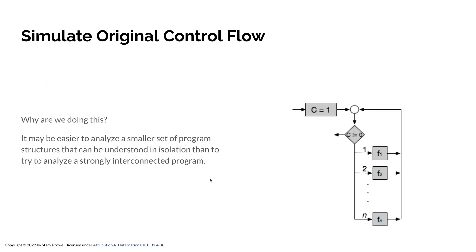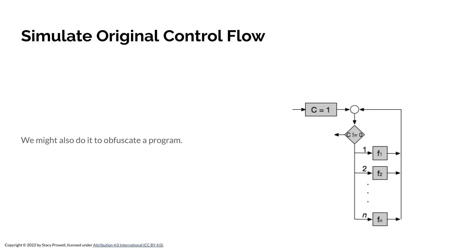We add a superstructure around all of these to simulate the original program structure. We initialize the counter to 1, and then while the counter hasn't reached zero — the exit is labeled 0 — we check if we should do node 1, if so perform F1; if the counter is 2, perform F2; if the counter is 3, perform F3, and so on. If I can take a complex spaghetti code program and turn it into a program that uses only a fixed set of structures, then I can write analysis for each of those structures and then analyze any program.